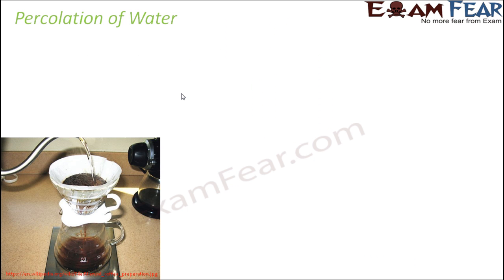Let us start with percolation of water. Percolation is the name given to a process of a liquid slowly passing through a filter. A filter paper is a kind of paper with tiny pores. When you pass a mixture through it, solid particles are not allowed through those tiny pores and are stuck, whereas the liquid passes through — that process is called percolation.